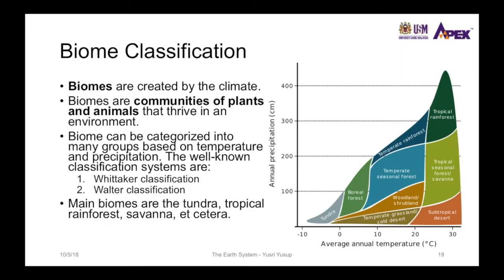Aside from climate classification, there is also the biome classification, which looks almost similar to climate classification except now it applies to organisms or living things. The biomes are created by the climate, which influences the type of biomes that exist in an area. Biomes are communities of plants, animals, and other living things that thrive in an environment.